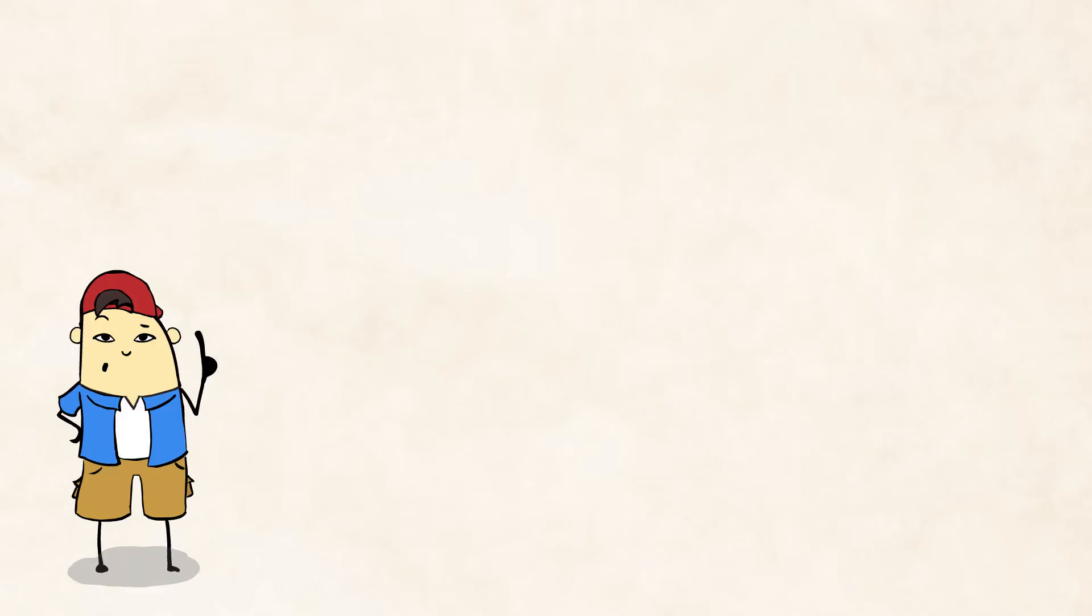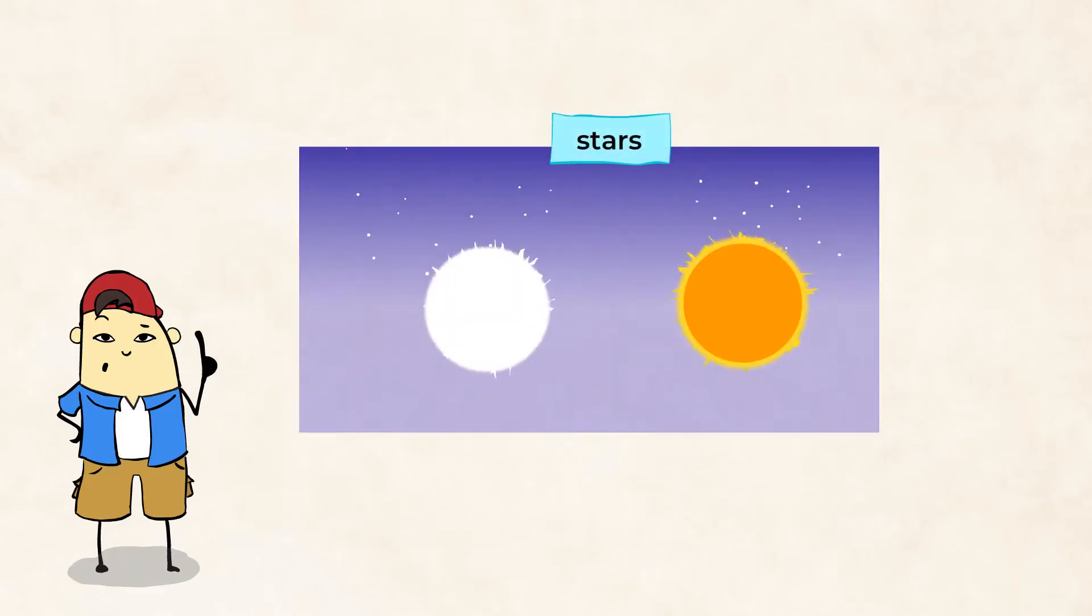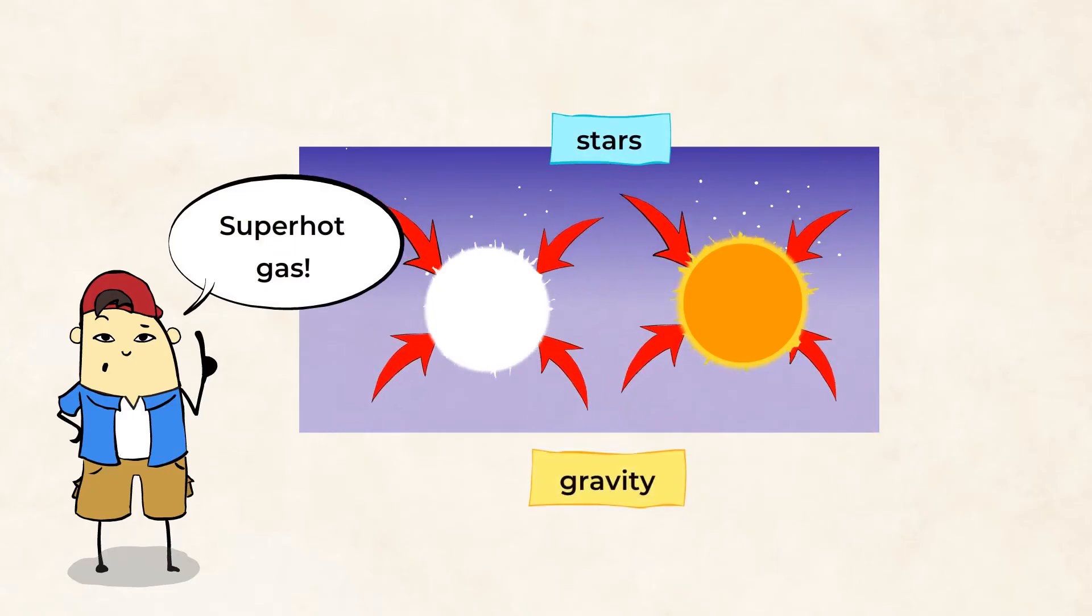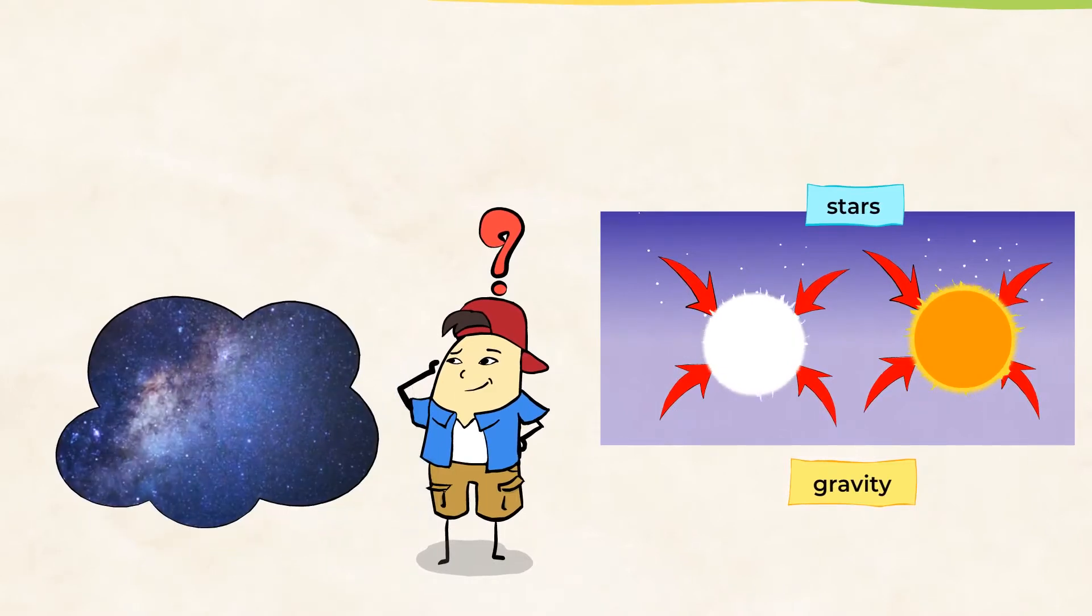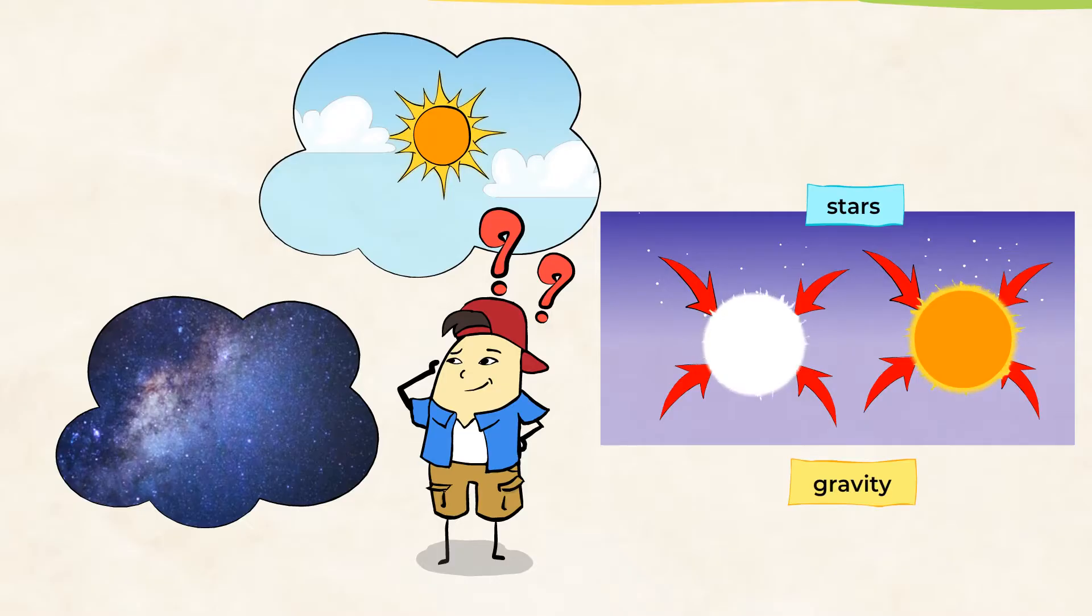Let me remind you, a star is a giant ball of super hot gas held together by its own gravity. But have you ever really thought about what we see when we look at the sky? Why are some stars brighter than others? Why can we see the sun, which is a star during the day, but not other stars?